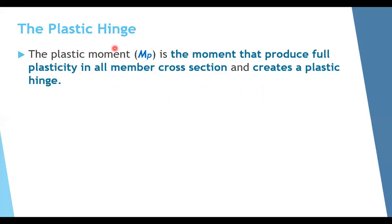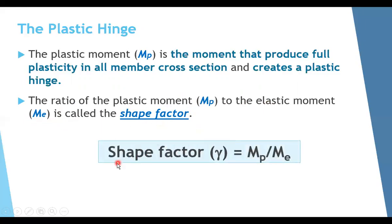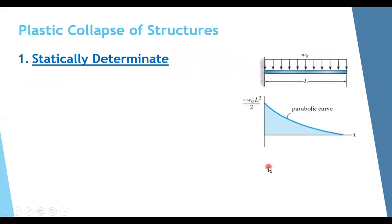The plastic moment M_plastic is the moment that produces full plasticity in all member cross sections and creates a plastic hinge. The elastic moment M_elastic (or M_yield) is the moment at which the top and/or bottom of the cross section just starts to yield. Once the cross section reaches fully plastic distribution, we call it M_plastic. The ratio of the plastic moment to the elastic moment — M_plastic / M_elastic — is called the shape factor (γ).